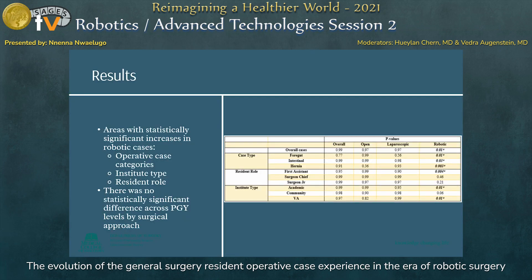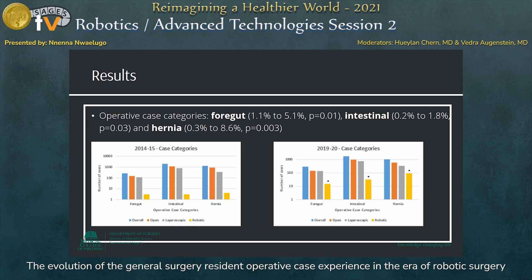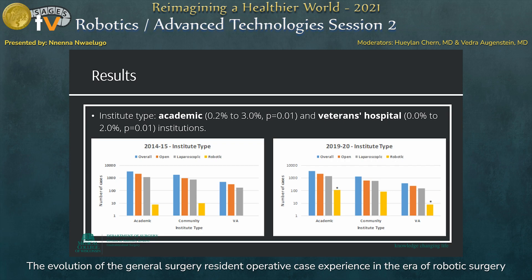There was a statistically significant increase in robotic cases when the analysis was run based on operative case categories, institute type, and resident role, but no significant difference in surgical approach across the PGY levels. The operative case categories with significant increases in robotic cases were foregut, where cases rose from 1.1% to 5.1%; intestinal, where they rose from 0.2% to 1.8%; and hernia, where they rose from 0.3% to 8.6%. At academic institutions, robotic cases increased significantly from 0.2% to 3%, and at the VA they rose from 0% to 2%, with no significant change seen at community hospitals.